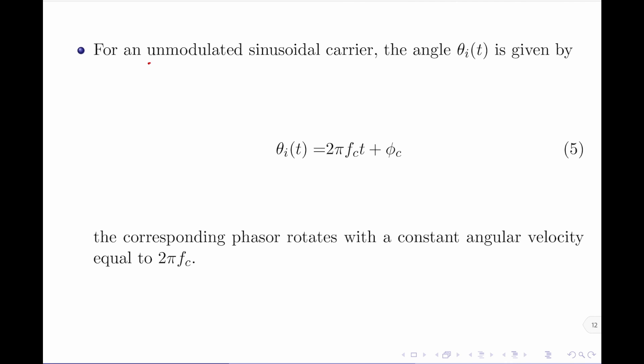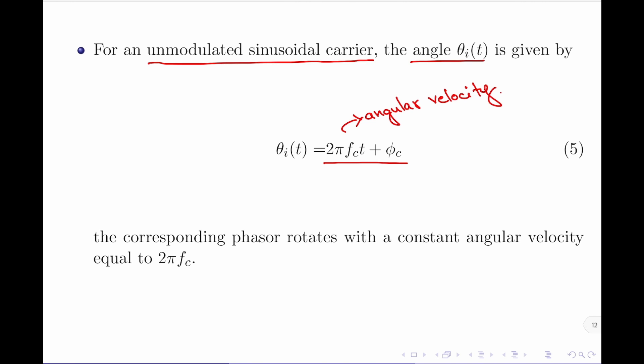Let us now consider the unmodulated sinusoidal carrier once again, with an angle θᵢ(t) equal to 2π·fc·t + φc. Extending the principle of the phasor to the unmodulated carrier, we can say that an unmodulated carrier signal can also be considered as a phasor with a constant angular velocity equal to 2π·fc. Since we have established the value of θᵢ(t), if we want to perform angle modulation, there are an infinite number of ways in which θᵢ(t) can be varied with respect to the baseband signal.